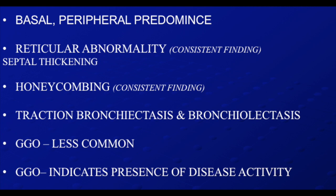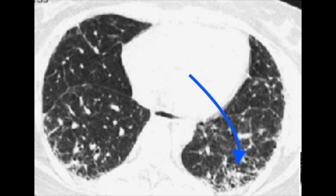In a known case of IPF showing all signs of irreversibility, if you see ground glass opacity, that means there is an exacerbation and acute alveolitis in a chronic case. This is inter- and intralobular septal thickening. There is subtle bronchiectasis and bronchiolectasis. As the bronchi go peripheral they converge — you have no business seeing such big bronchi in the periphery. This is traction bronchiectasis.